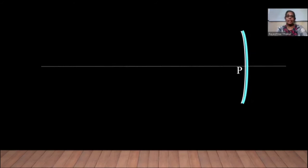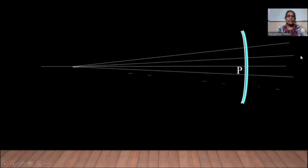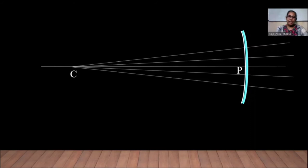If we consider a spherical mirror — concave or convex — and draw a line from the mirror to the center of curvature, that line is along the radius of curvature. The radius of curvature is always normal, that is perpendicular, to the spherical surface at the given point.